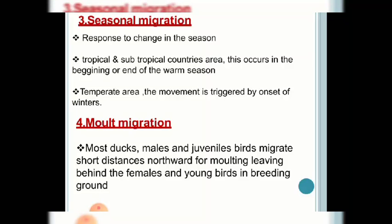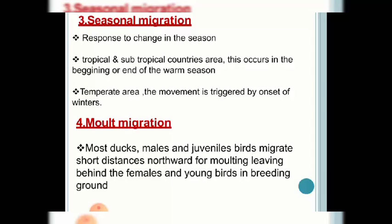The next type is molt migration, which is mainly seen in ducks. Usually the males and juveniles migrate towards the northern side over a short distance, while females and young ones are kept in the native place as the breeding ground. This type of migration is called molt migration and is mainly seen in ducks.